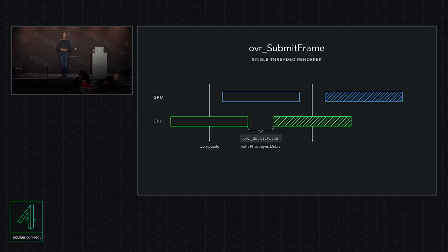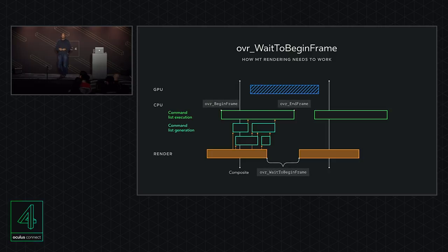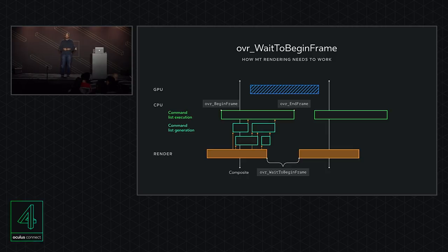In the single-threaded case with SubmitFrame, the CPU renders a frame, calls OVRSubmitFrame, which blocks until FaceSync decides it's time, then the next frame is rendered. In the multi-threaded case, there's probably a render thread calling OVRWaitToBeginFrame, then generating command lists in a multi-threaded fashion, with another thread consuming those command lists — that thread needs to call OVRBeginFrame and OVREndFrame.